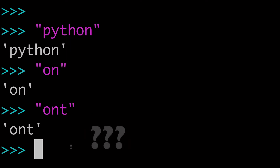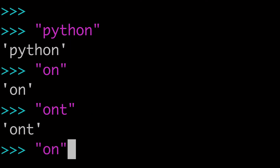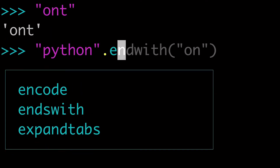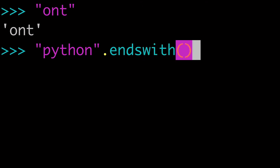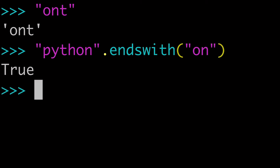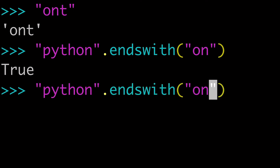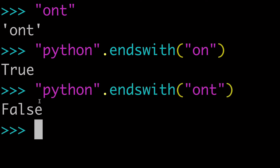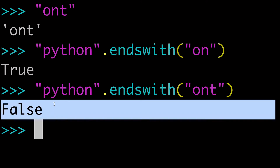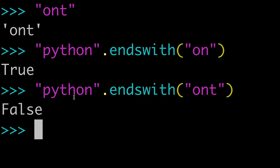The easiest way to do that is with the endswith string method. What you would do is take your original string and then do dot endswith, and then pass your substring. So we could pass 'on', and we can run that and see that it's true — Python does end with 'on'. And we could pass 'ont', and we can see that that is false — Python does not end with 'ont'.